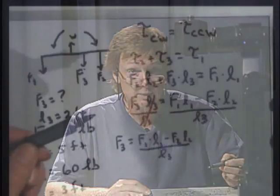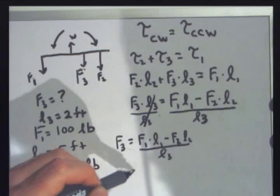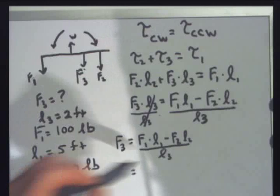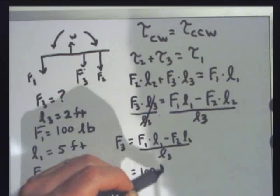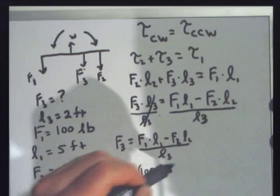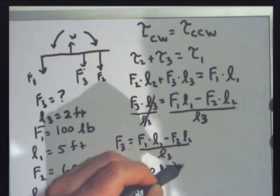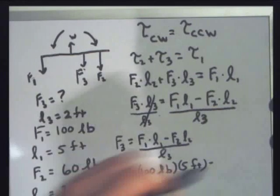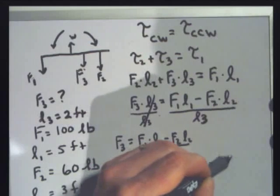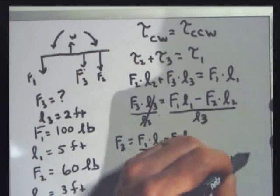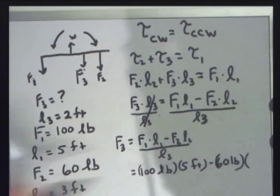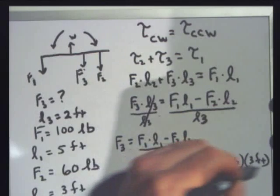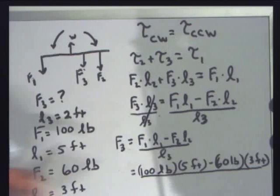Now, we can just plug in numbers. Right below that, I'll say equals. Now, F1, I go to my shopping list. Look at that. There's my variable F1. There's 100 pounds. I go to L1. That's 5 feet. Minus F2, which is 60 pounds, times L2, which is 3 feet. And all that is divided by L3, which is 2 feet.